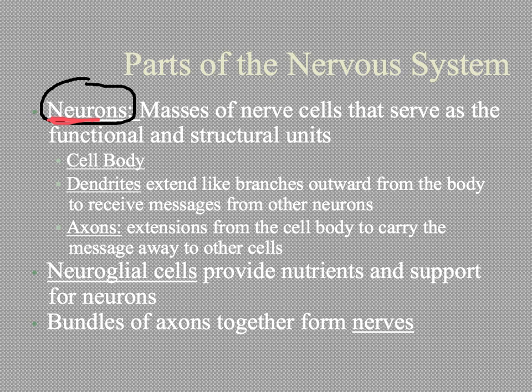There are some parts that all neurons have. The first is the cell body, and then there are dendrites and axons. We're going to spend some more time in a few minutes talking about those, so I'm not going to focus on them at this point.